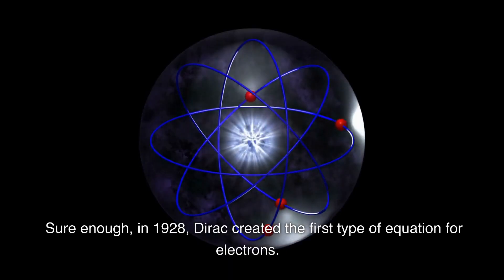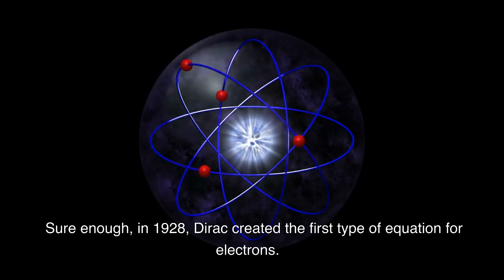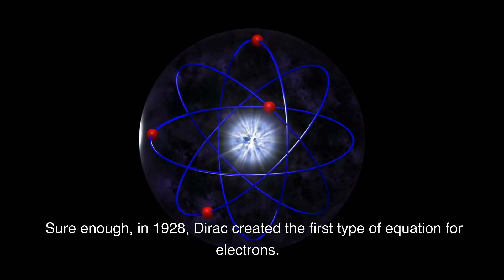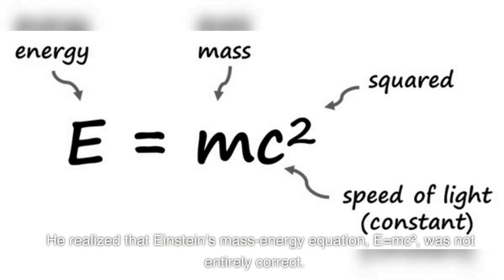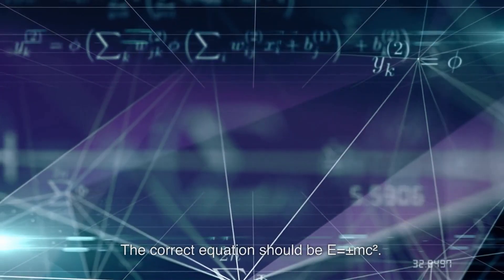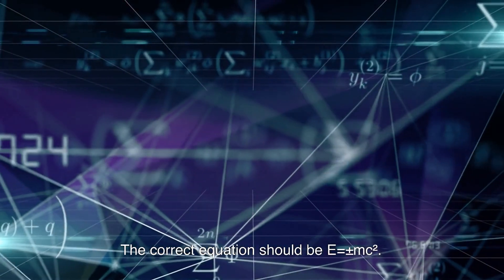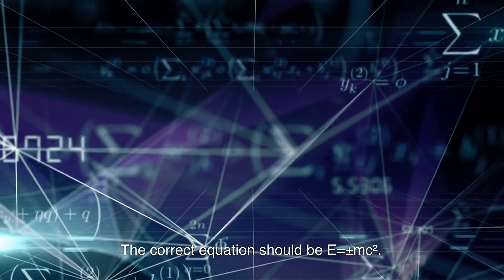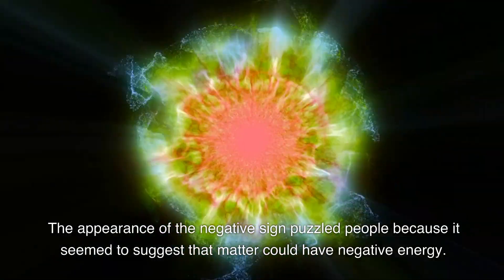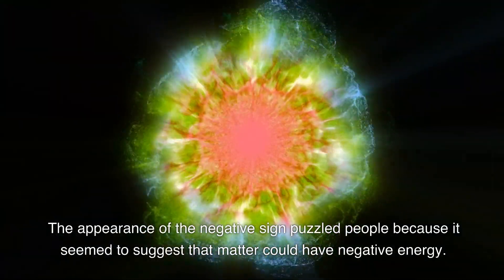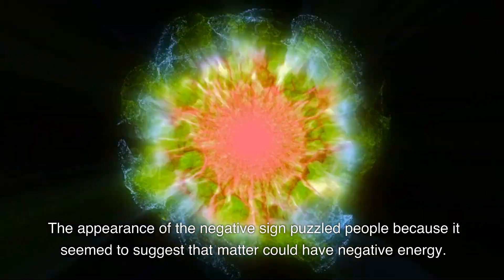Sure enough, in 1928, Dirac created the first type of equation for electrons. He realized that Einstein's mass-energy equation, E equals mc², was not entirely correct. The correct equation should be E equals plus or minus mc². The appearance of the negative sign puzzled people because it seemed to suggest that matter could have negative energy.